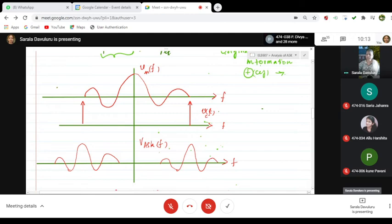Combining these two what you are getting is you have a frequency spectrum. This is your Fc plus Fm on the right side and it is Fc minus Fm onto the left side.